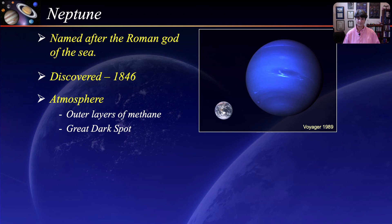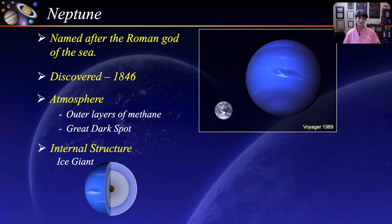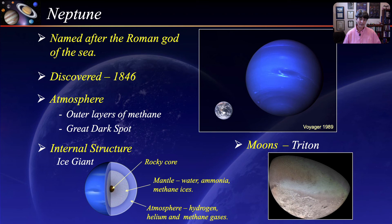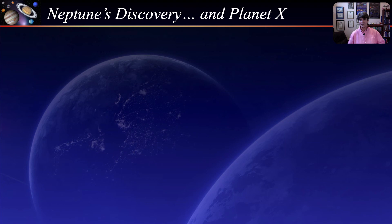Neptune's internal structure is very similar to Uranus and is also called an ice giant — a rocky core surrounded by a mantle of water, ammonia and methane ices, followed by an atmosphere of hydrogen, helium and methane gases. Neptune has 14 known moons of which Triton is the most significant. The most interesting fact about Triton is that it has a retrograde orbit — it moves in the opposite direction to Neptune. Triton was probably another body that was captured by Neptune's gravity.